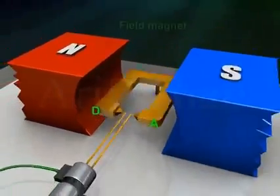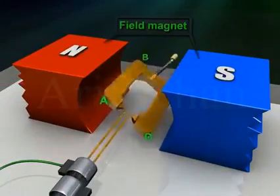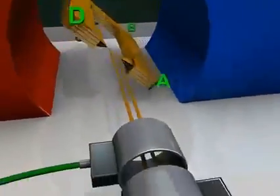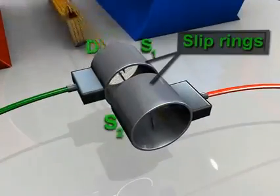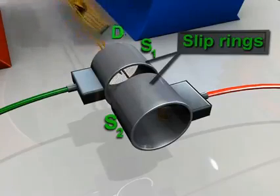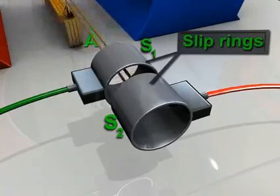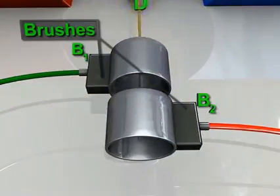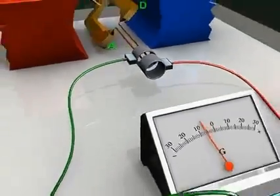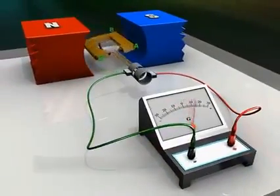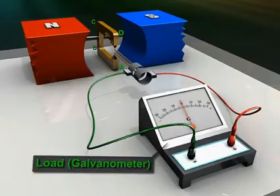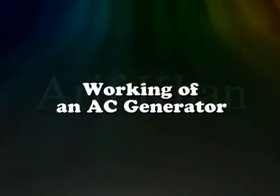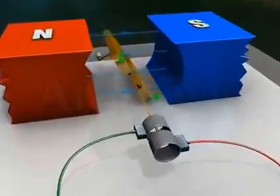A field magnet, which may be a strong permanent magnet with concave poles. Two slip rings S1 and S2, which are connected to the armature and rotate with it. Two brushes B1 and B2, which provide electrical contact with the slip rings, and a load which may be a galvanometer.